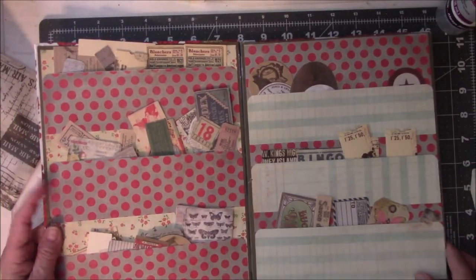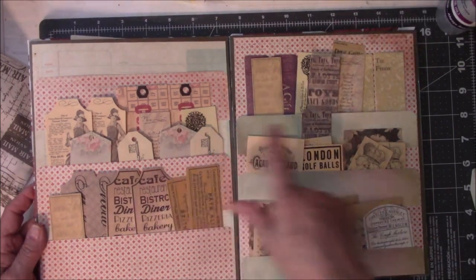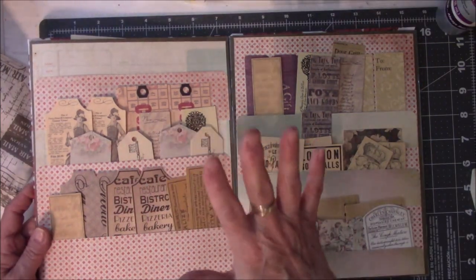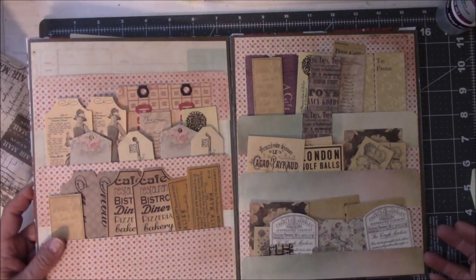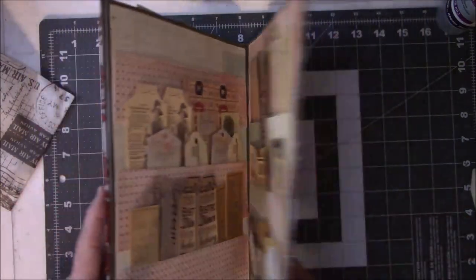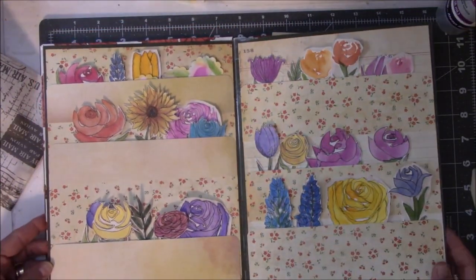So these are store-bought ephemera. You can use tall ones, short ones. You can use these for tags, envelopes, whatever kind of stuff you want.